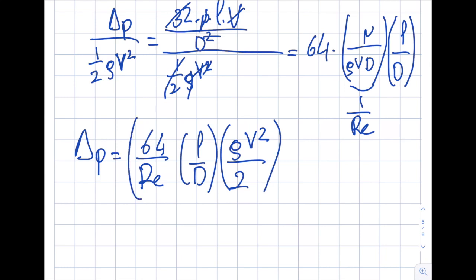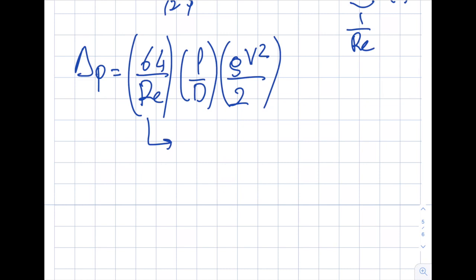And this 64 over Reynolds has a name as well. This is called F, Darcy friction factor. 64 over Reynolds.